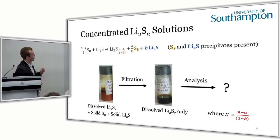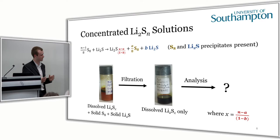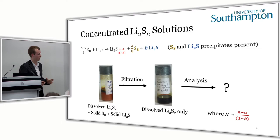We prepared a variety of solutions, particularly focusing on very concentrated solutions — 10 and 20 molar concentrations — to really saturate the electrolyte with polysulfides. We allowed these to equilibrate over multiple days, even a week of heating, and then also allowed them to equilibrate at room temperature for consistency, before filtering. After filtering, we were left with our dissolved polysulfides in solution, which we then went on to analyze.